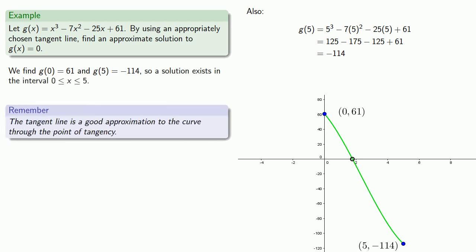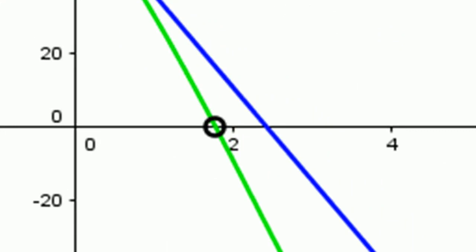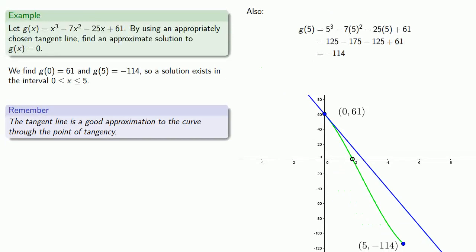Remember that the tangent line is a good approximation to the curve, which means that wherever the tangent line crosses the x-axis will be close to where the curve crosses the x-axis. So let's find where the tangent line crosses the x-axis.